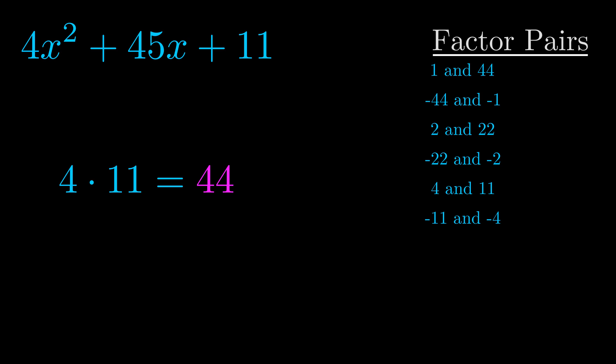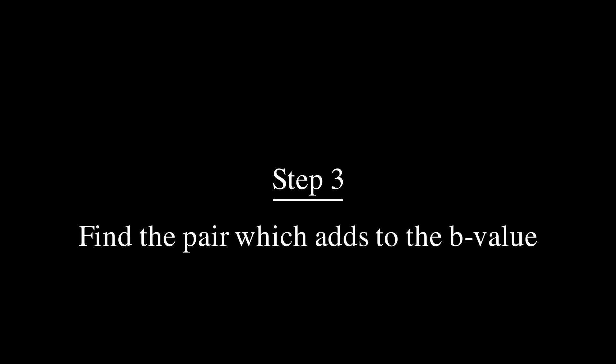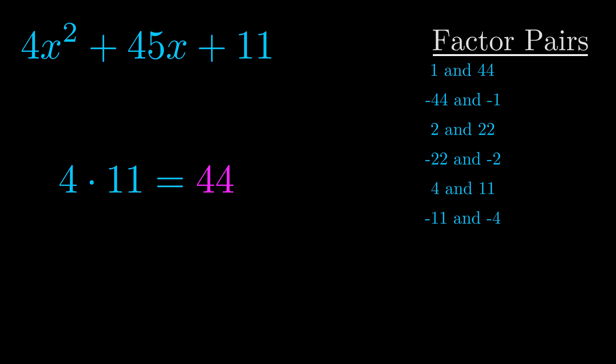Now once you have these factor pairs, the goal is to find which of these pairs adds to the b value. The b value is the coefficient on the x term. That's the middle term, the one that we haven't done anything with yet. And really this is the only factor pair that we need.